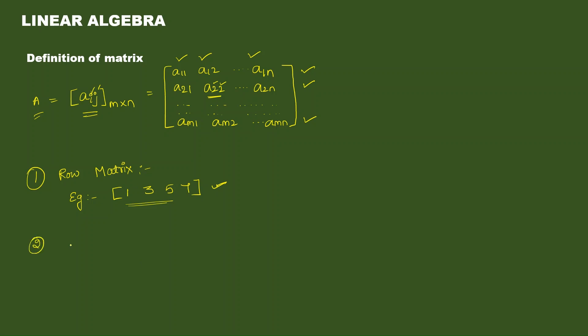Next — column matrix. A matrix having a single column is called a column matrix. Example: [2, 3, 5]. Only a single column arukkhu; rows vandhutu any number of rows irukkalam. Sometimes called row vectors and column vectors — row matrix row vector anu, column matrix column vector anu kuda sollalaam.